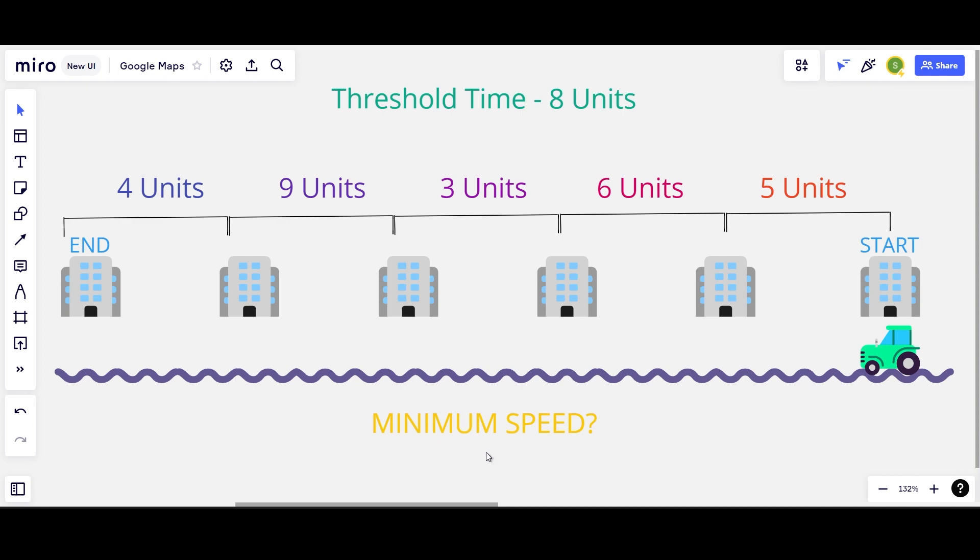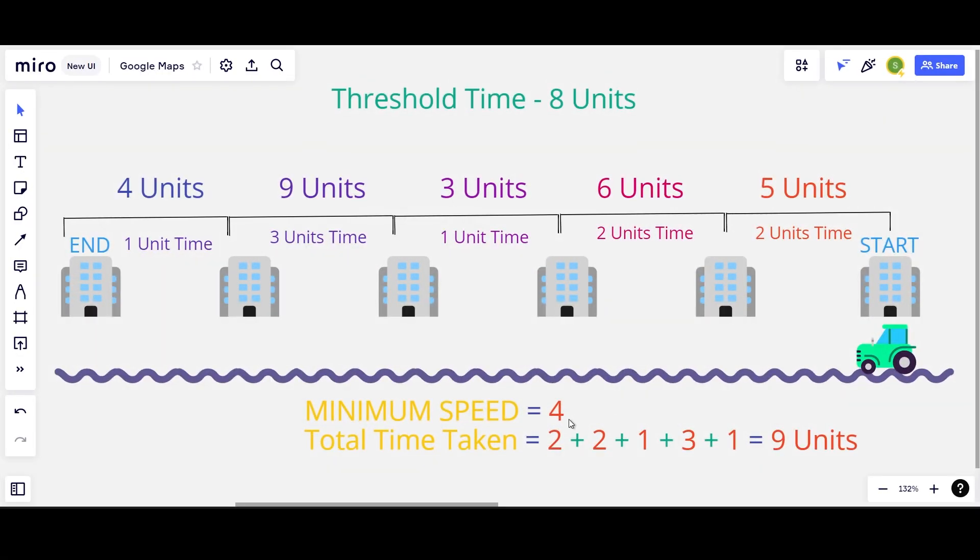What can be my minimum speed? Let's take 4 units as our speed and check if we can make an entire trip within the 8 units time. So with a minimum speed of 4 units, we can cover the 5 units distance in 2 units time. We can cover the next 6 units distance again in 2 units time.